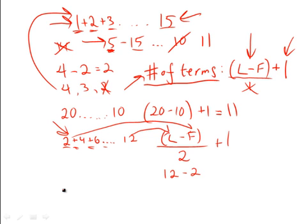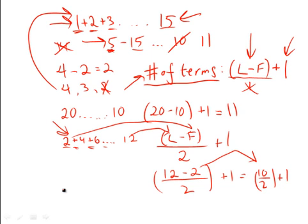So in this case we have the last digit is 12, first digit is 2, so we bring it down here: 12 minus 2, divided by 2, plus 1. This gives us here 10 over 2, plus 1, which is 5 plus 1, or there are a total of 6 digits here.